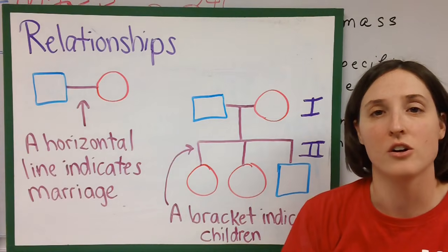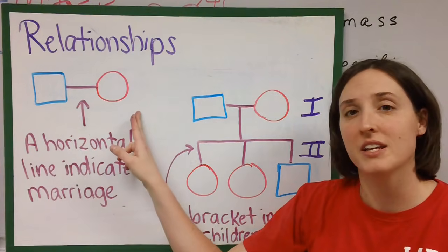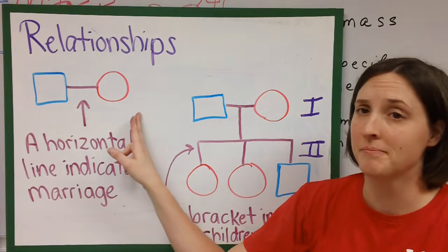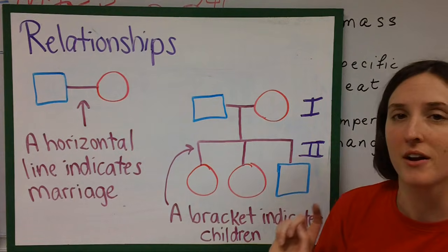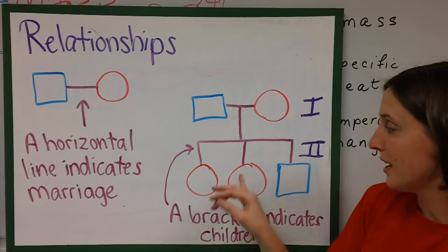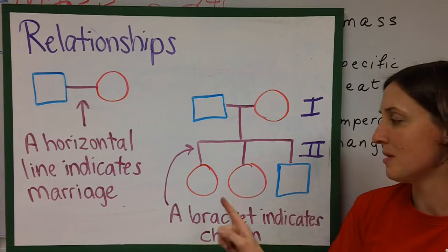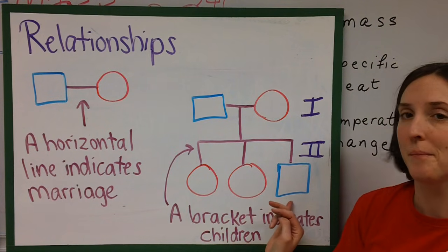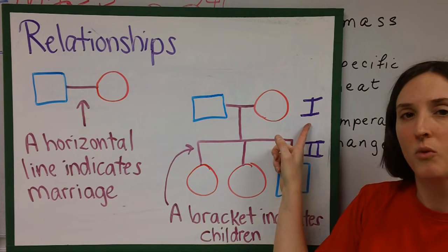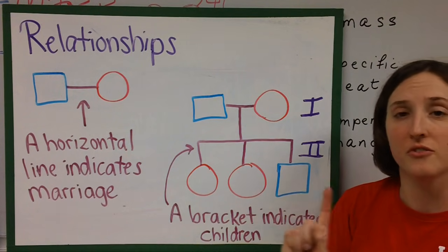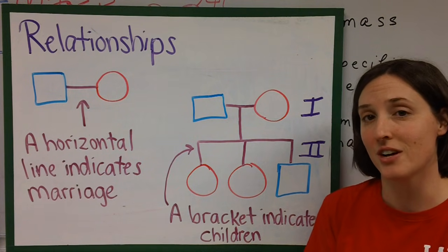Relationships on family trees are indicated by lines. A horizontal line between a male and a female indicates that those two people are married. If you look to the right, you'll see that we have two people who are married and then a bracket that represents their children. They have two girls and one boy as represented by the circles and the square. Roman numeral one means these are the parents, the first generation, and Roman numeral two means these are the children, the second generation.